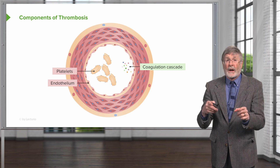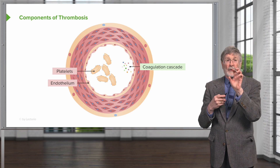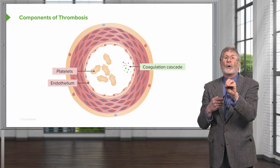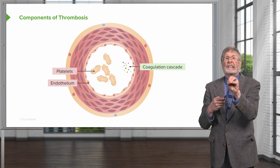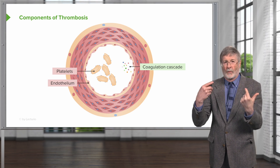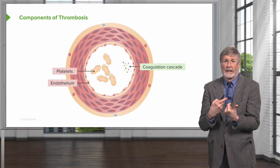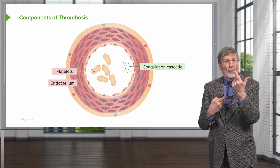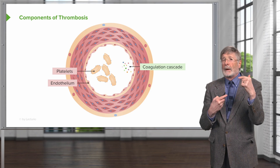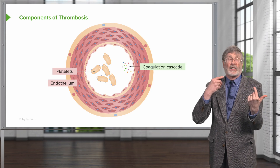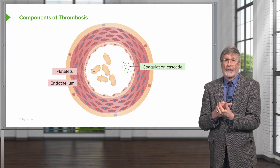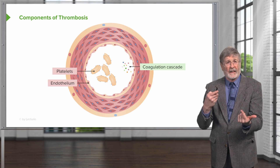To summarize where we are: we have the platelets, and we've talked in detail about the various components of platelet activation and driving the coagulation, especially early on. We have the coagulation cascade that we're going to be talking about next, and we will come back to endothelium because these are very important players. And with that, we have concluded.